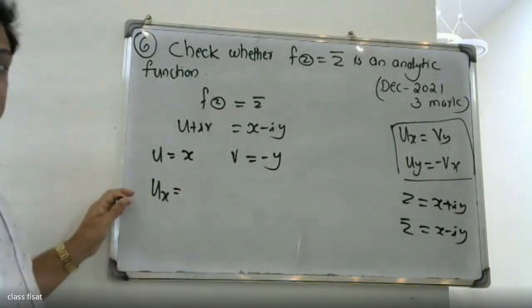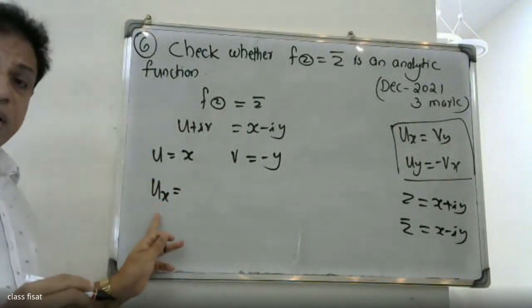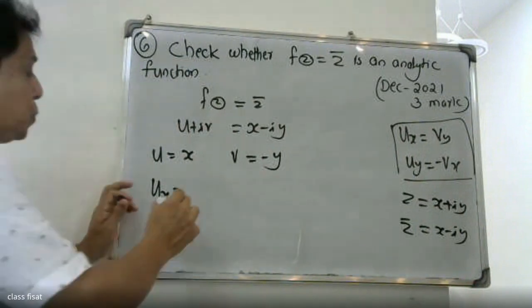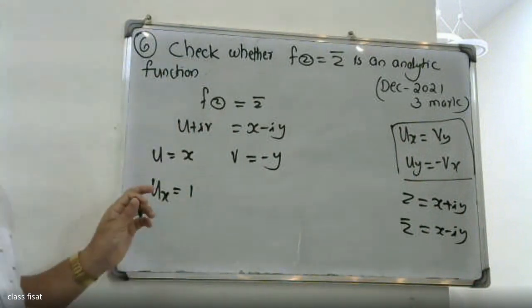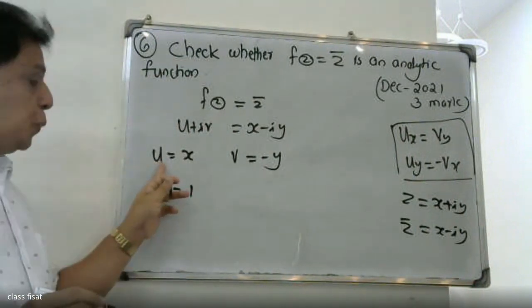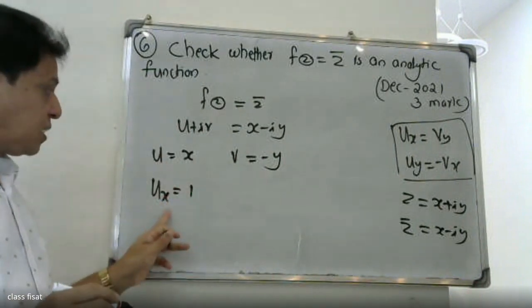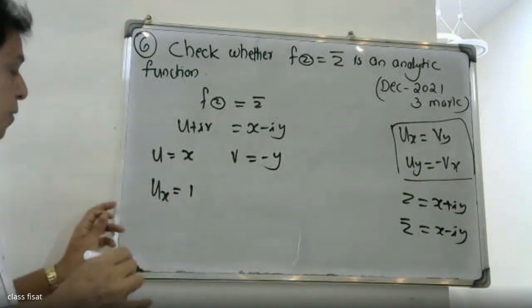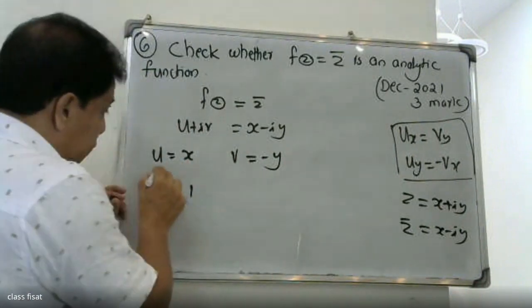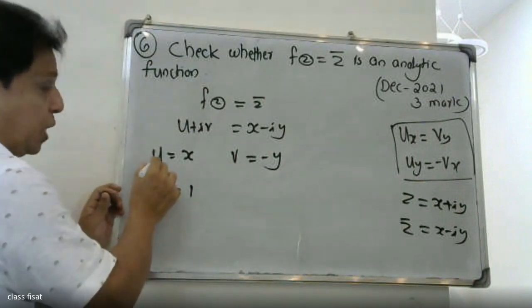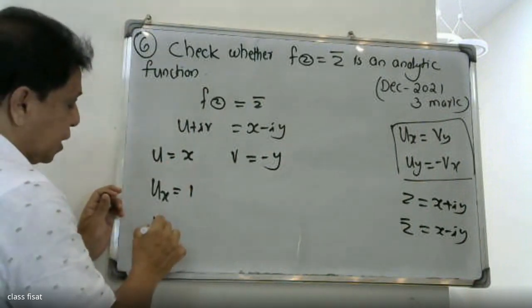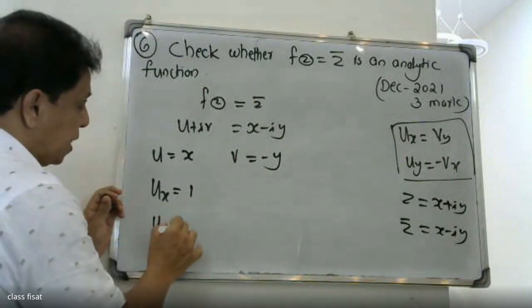Differentiating u with respect to x, we get ux is equal to 1. When partially differentiating the function u with respect to x, treating y as constant, then differentiating u with respect to y.